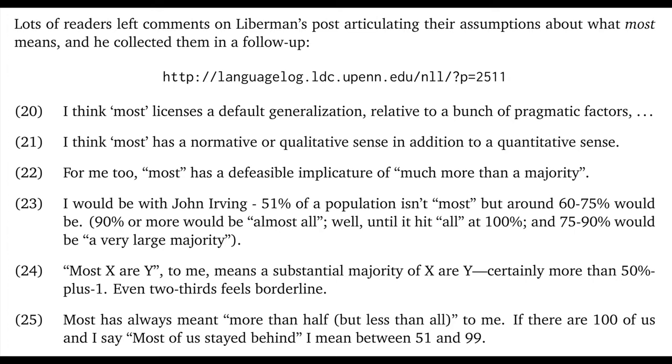But then these next few comments seem to say directly that we were wrong to assume that most starts to be true just past 50%. The first one says 60 to 75%, and it expresses a few other claims about different determiners. The second one says something similar, two-thirds as the boundary marker. And the final comment I included here in 25 is the only one in this little sample that seems to side with us. It says: most has always meant more than half, but less than all to me. Now, I do want to take issue with the 'but less than all' part. I want to claim that that's a pragmatic inference as well. But we'll set that aside for now.